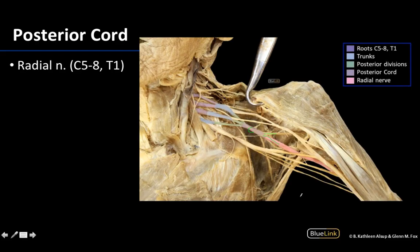Those are the structures you need to identify in terms of the brachial plexus. While you don't need to memorize specifically how to identify roots and trunks, it is helpful for identifying some of the more distal and terminal branches. Please feel free to reach out to me or any of the anatomy faculty — as you would imagine, the brachial plexus is one of our favorite areas. Thanks and have a good day.